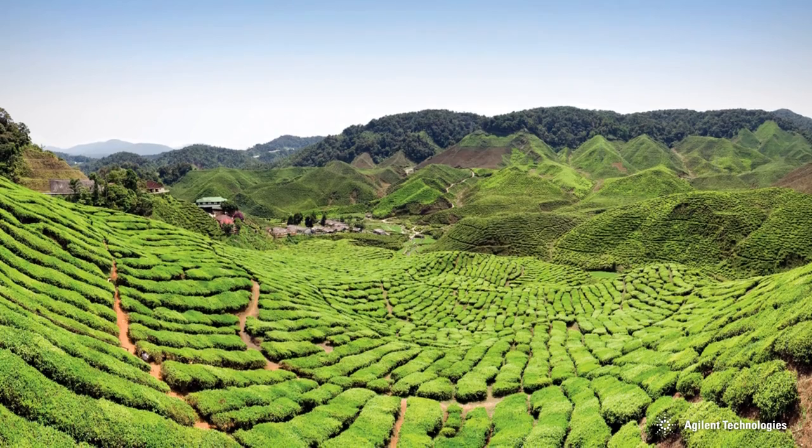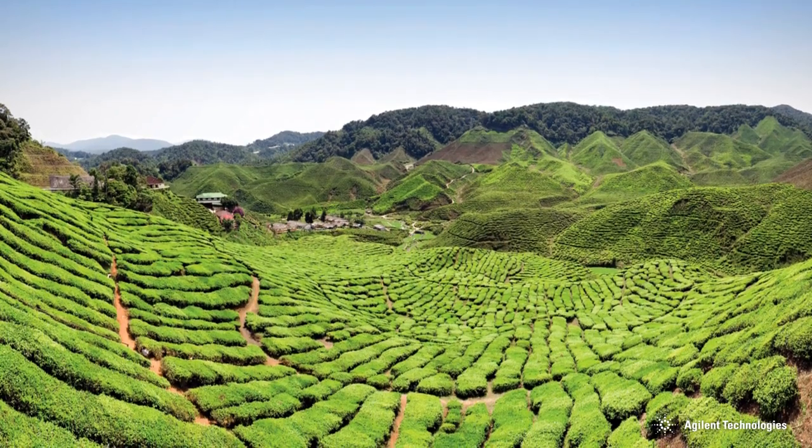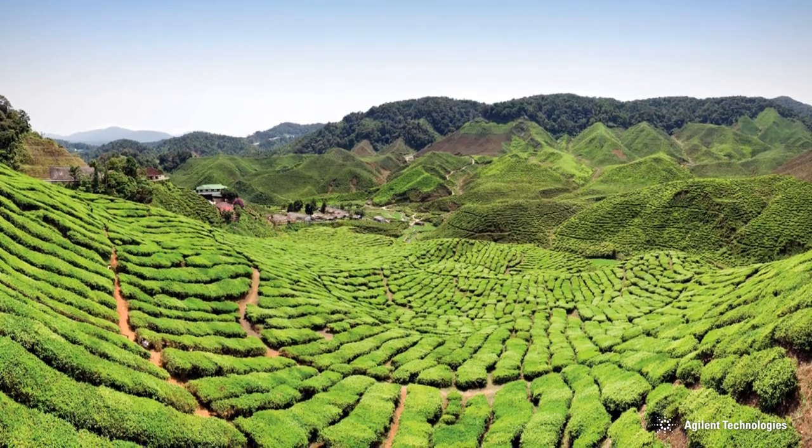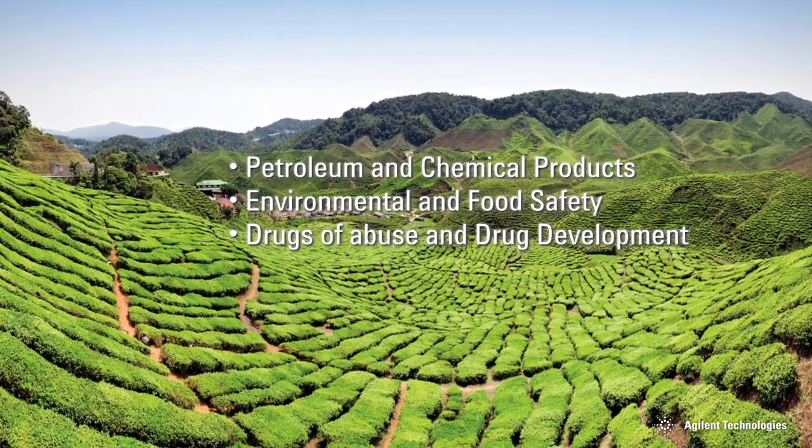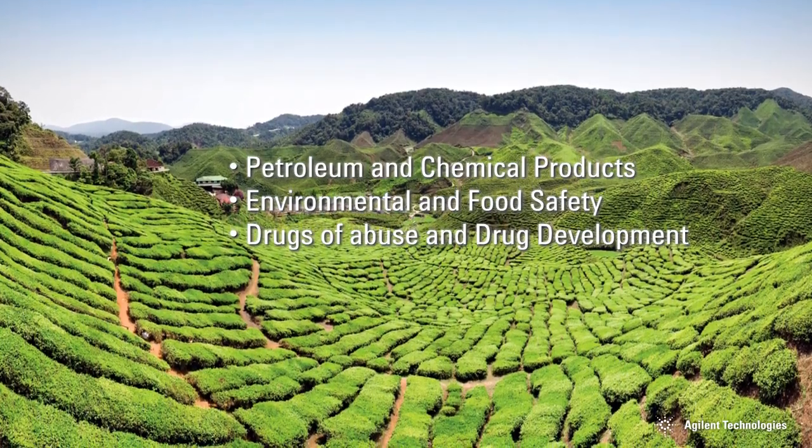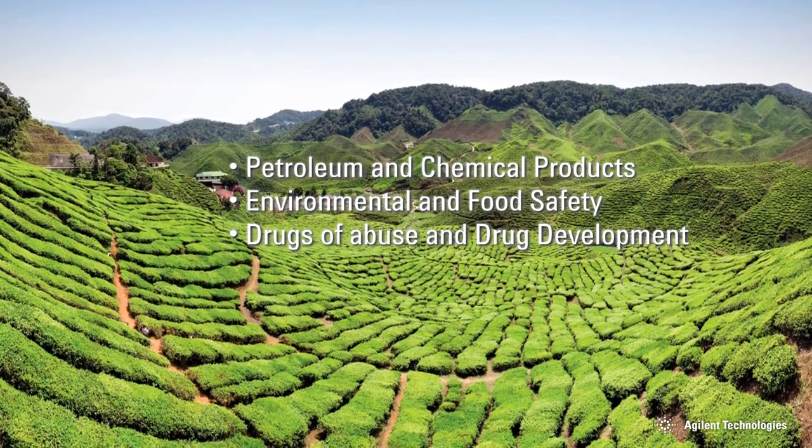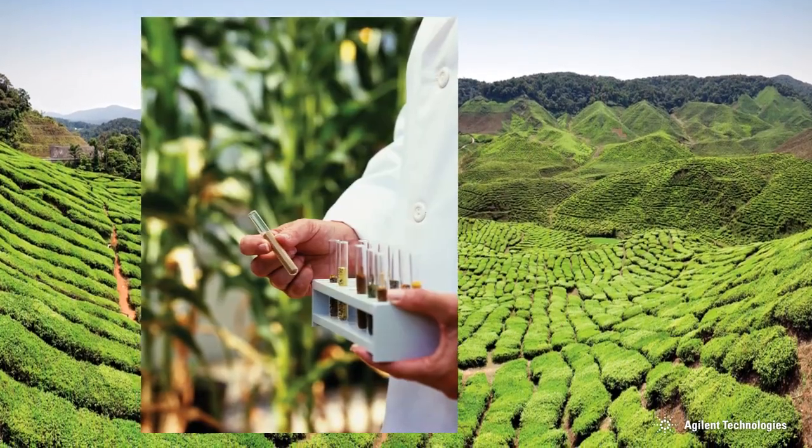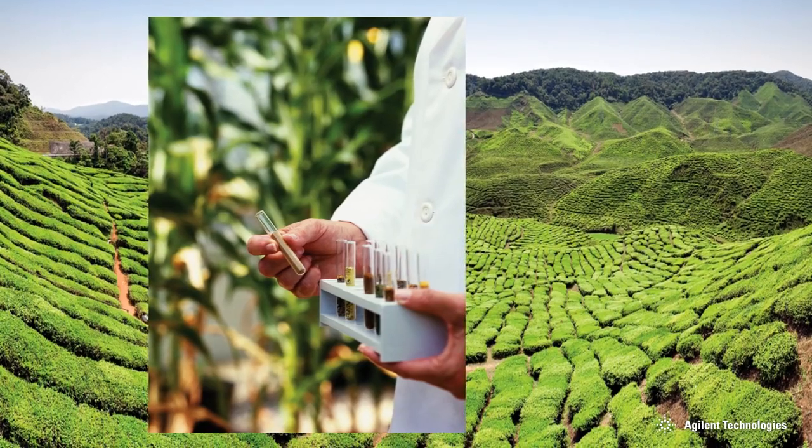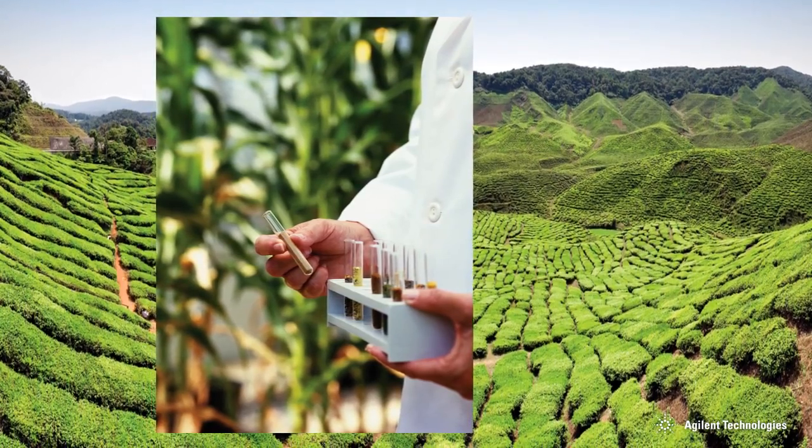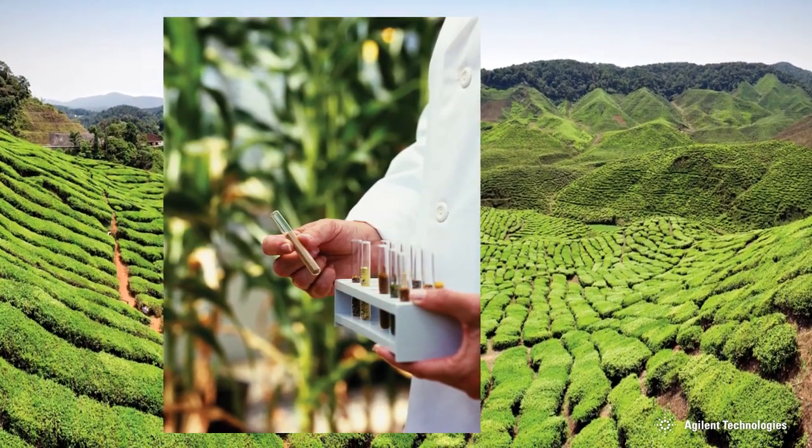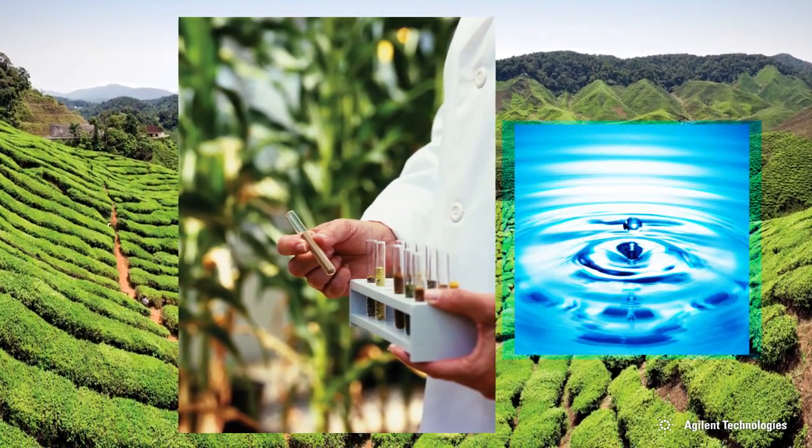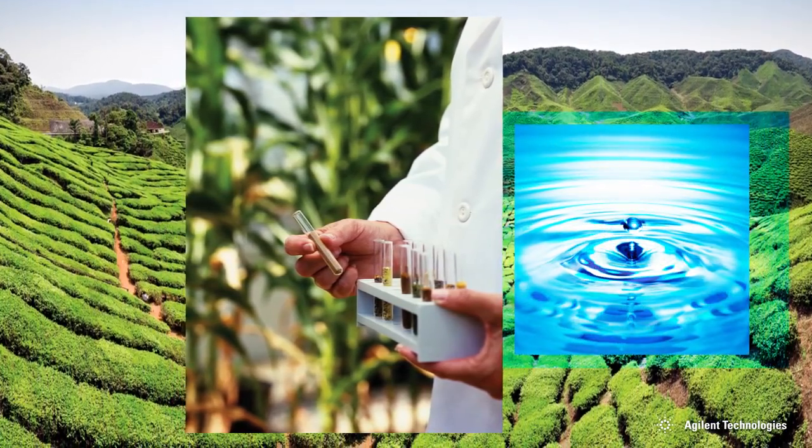The gas chromatograph is used to analyze samples from many different industries for quality control and for research. GCs are used for the development of new products from the petrochemical to the pharmaceutical industry. The GC is also used in environmental and clinical labs to determine levels of toxic chemicals in the human body, in our agricultural products, the air we breathe, and the water we drink.